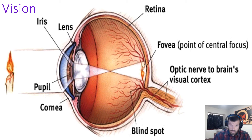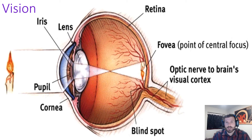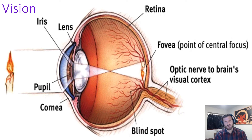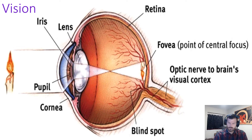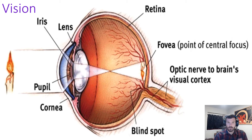All right, how's it going everyone? So today what we're going to do is spend a little bit of time talking about the two most relied on senses in our body, both our vision and our hearing. We'll go through these fairly quickly, talking about the different structures of the eye and the ears and how they work. So let's start with the eye.